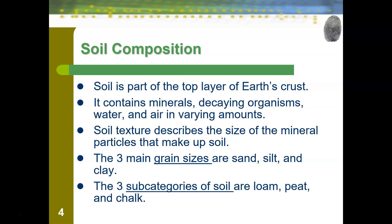There are three main grain sizes. We have sand, which is the largest, where you can see the individual particles. Silt is one size smaller — with the naked eye you can still kind of make out the particles but not as clearly. Then there's clay, where you can't actually see the individual particles anymore; they all mush together. They are still technically separate particles, visible under a microscope, but not with our eyes.